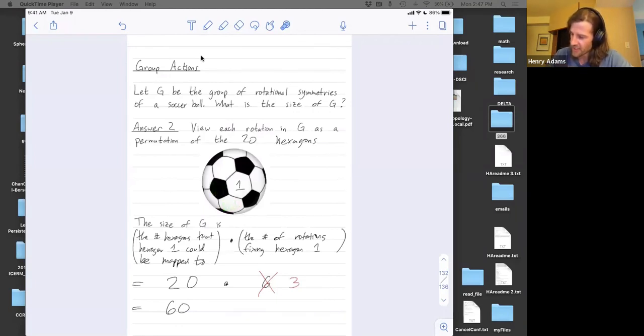So if I map only one sixth of the way around or only three sixths of the way around or only five sixths of the way around, I don't preserve the stitching pattern. I have to map either zero sixths or two sixths or four sixths of the way around. Right. So I only have three different ways that I could rotate that fix this hexagon because I could rotate around like that, or I could rotate around like that, or I could rotate the entire way around, which is just the same as doing nothing.